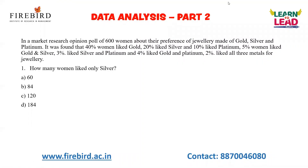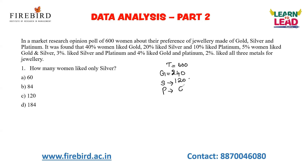See this question. In a market research opinion of 600 women about their preference of jewelry made of gold, silver, and platinum, it was found that 40% of women like gold. While reading the question itself, we should start to solve. In total there are 600 women; the people who preferred gold were 40%, so what is 40% of 600? 10% is 60 and 40% is 240. And 20% like silver, so 20% is 120. And 10% like platinum, that is 60.